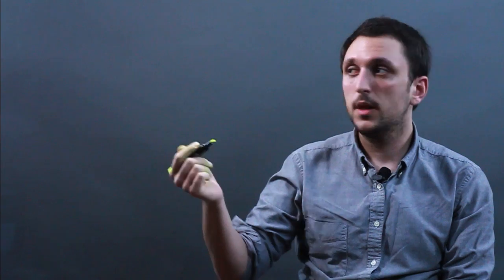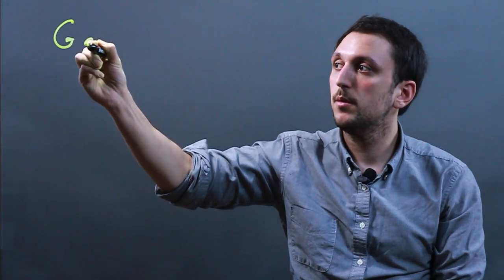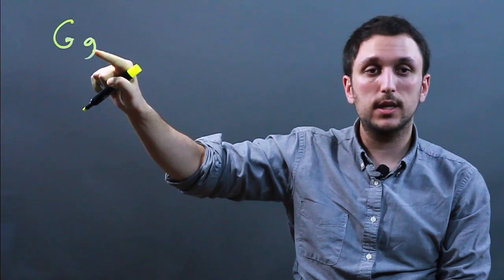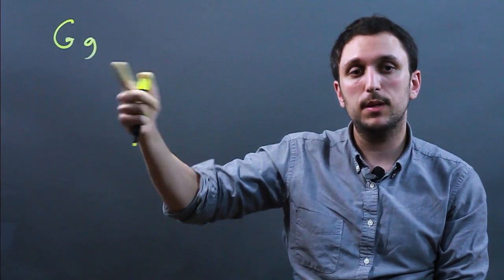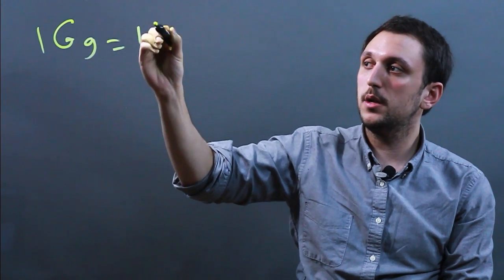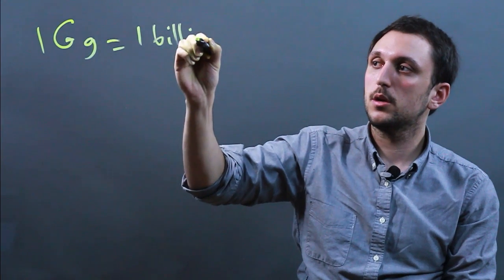A gram is a unit of mass, measurement of mass, in the metric system. And a gigagram is one billion grams. Giga as a prefix means one billion. So one gigagram equals one billion grams.